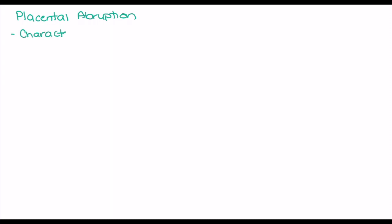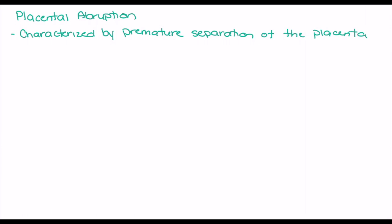Placental abruption is characterized by premature separation of the placenta during pregnancy. It most commonly occurs during the second half of pregnancy and is the most common cause of bleeding during the second and third trimesters. Placental abruption affects approximately 1% of all pregnancies and is a significant cause of perinatal morbidity and mortality.